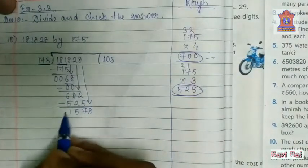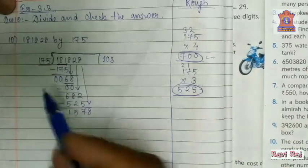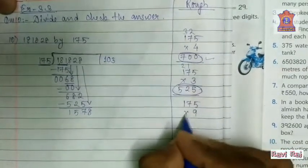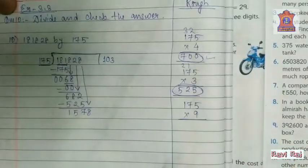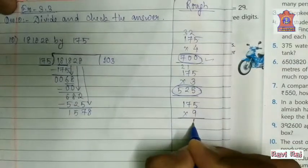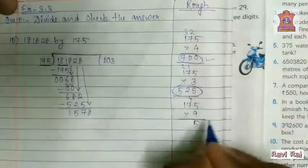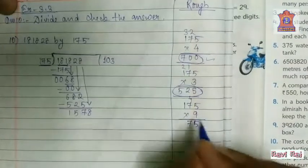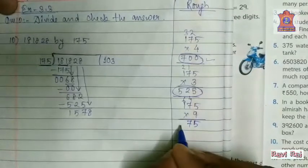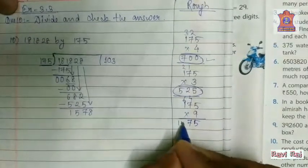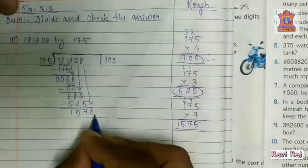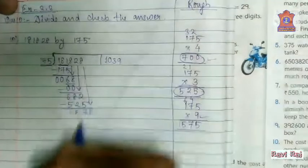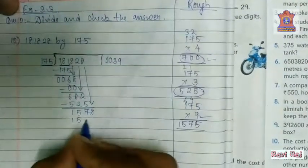So it is a big number, a 4-digit number. We will be multiplying at a greater number. Let's take 9. 175 into 9: 9, 5's are 45, carry 4; 9, 7's are 63 plus 4 is 67, carry 6; 9, 1's are 9 plus 6 is 15. So 175 into 9 equals to 1575. 1575 is smaller than 1578, so we can take 9.